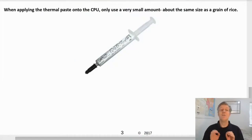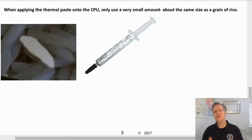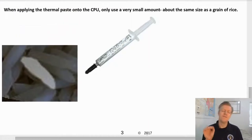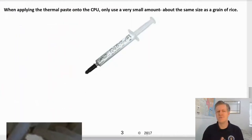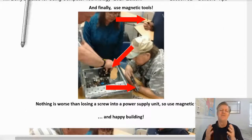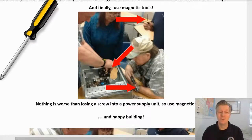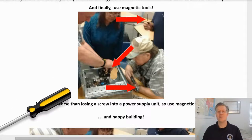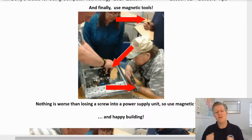When applying the thermal paste or thermal compound onto the CPU, only use a very small amount, about the same size as a grain of rice. And finally, use magnetic tools — nothing is worse than losing a screw into a power supply unit. So use magnetic tools.